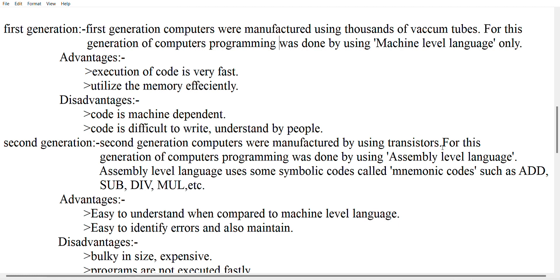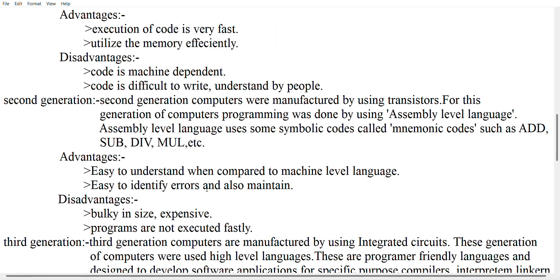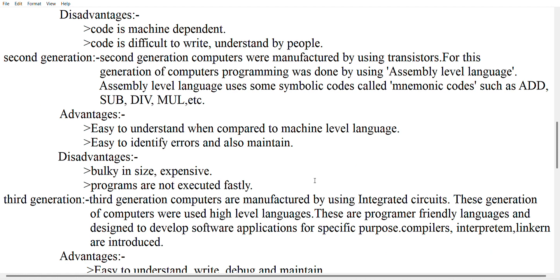Assembly level language uses symbolic codes called mnemonic codes such as ADD, SUB, DIV, MUL, etc. The advantages of second generation are that it is easier to understand compared to machine level language, errors can be identified easily, and programs are easier to maintain. The disadvantages are that size is bulky, cost is very expensive, and programs are not executed as fast.